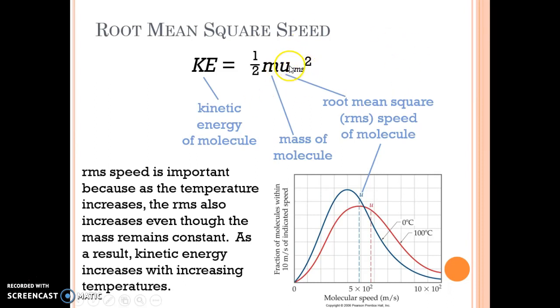So the root mean square speed is going up, more molecules are going to be moving at a slightly faster rate as we increase the temperature, but the mass isn't changing. So that allows us to increase the kinetic energy as the temperature is going up.